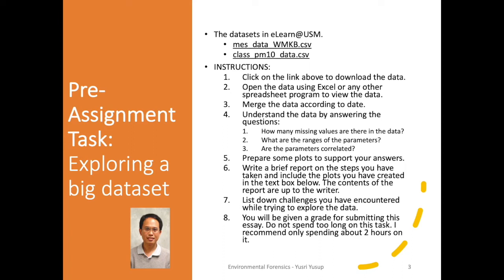The next step is to prepare some plots to support your answers. Can you provide evidence to support those answers? For example, if you find that there is a correlation between temperature and PM10 concentration, create a scatter plot and draw the regression line between the data to show that correlation. You can also prepare other plots such as time series plots.